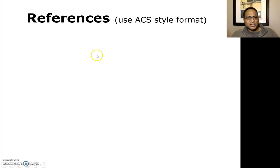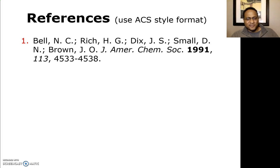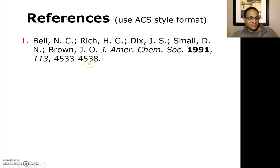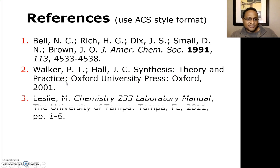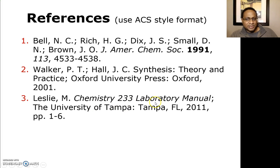Now let's look at the references. Always use the American Chemical Society style format. For a journal reference like the Journal of the American Chemical Society, ensure the year is in bold, the volume is italicized, followed by the page number, with the authors' names listed before. For a textbook reference, include the publisher, where they're located, and the title of the text. For a lab manual, here's one published at the University of Tampa — pay special attention to those important details.